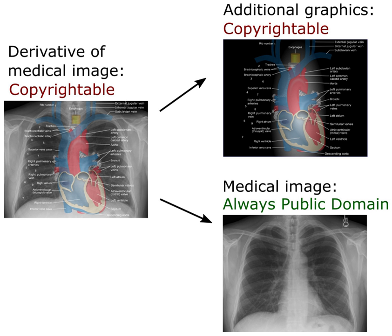Cite the author's name, screen name, or user ID. If the work is being published on the Internet, it is nice to link that name to the person's profile page if such a page exists. Cite the work's title or name if such a thing exists. If published on the Internet, it is nice to link the name or title directly to the original work. Cite the specific CC license the work is under; if published on the Internet, it is nice if the license citation links to the license on the CC website.